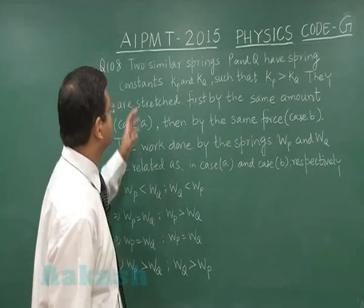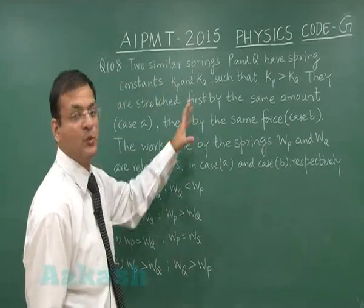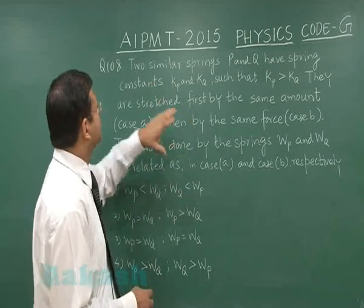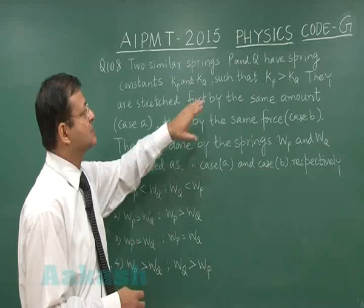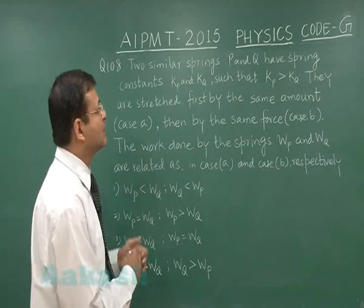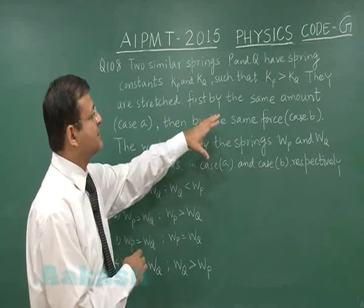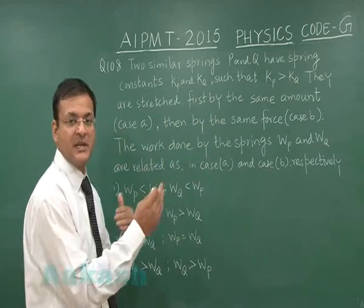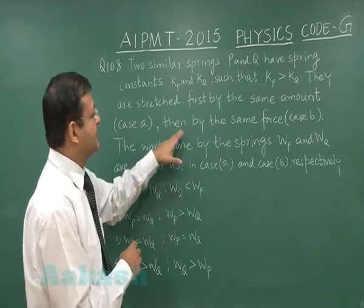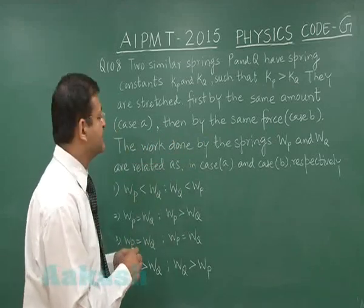Question number 108 is a work-energy-power question. It says two similar springs P and Q have spring constants Kp and Kq such that Kp is greater than Kq. One spring constant is larger than the other. They are stressed first by the same amount, meaning the value of x is the same in both in case A, and then by the same force in case B.